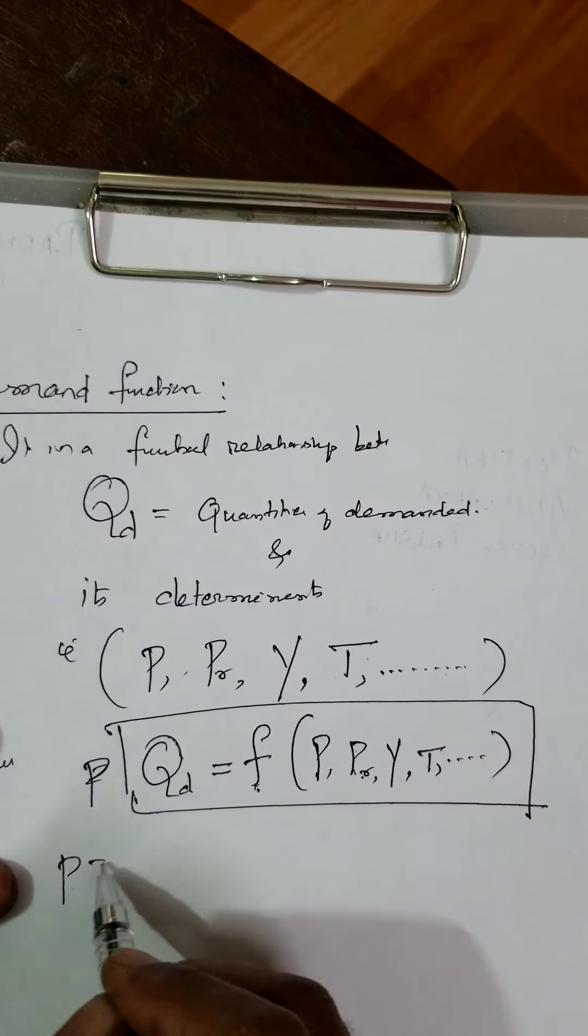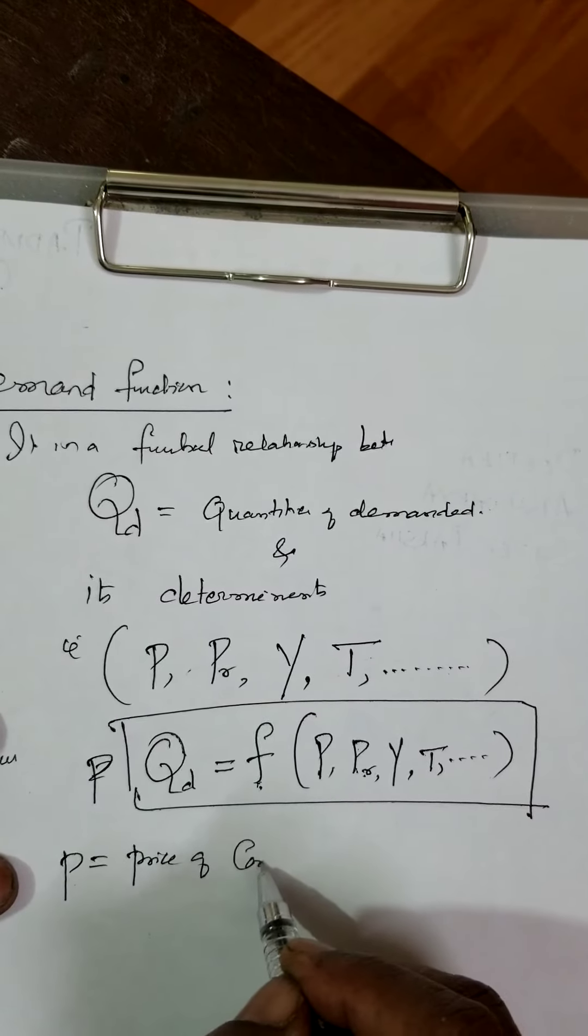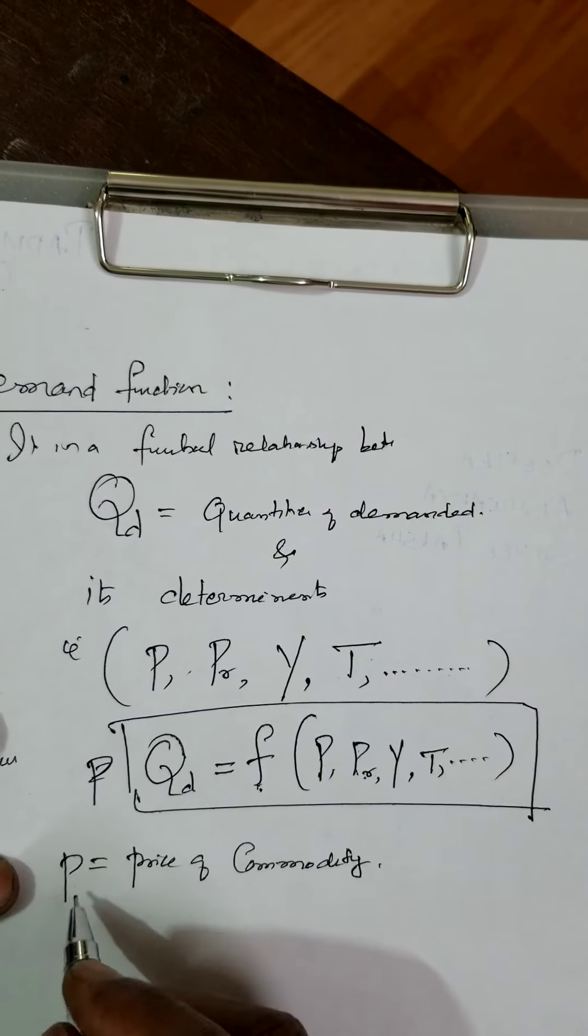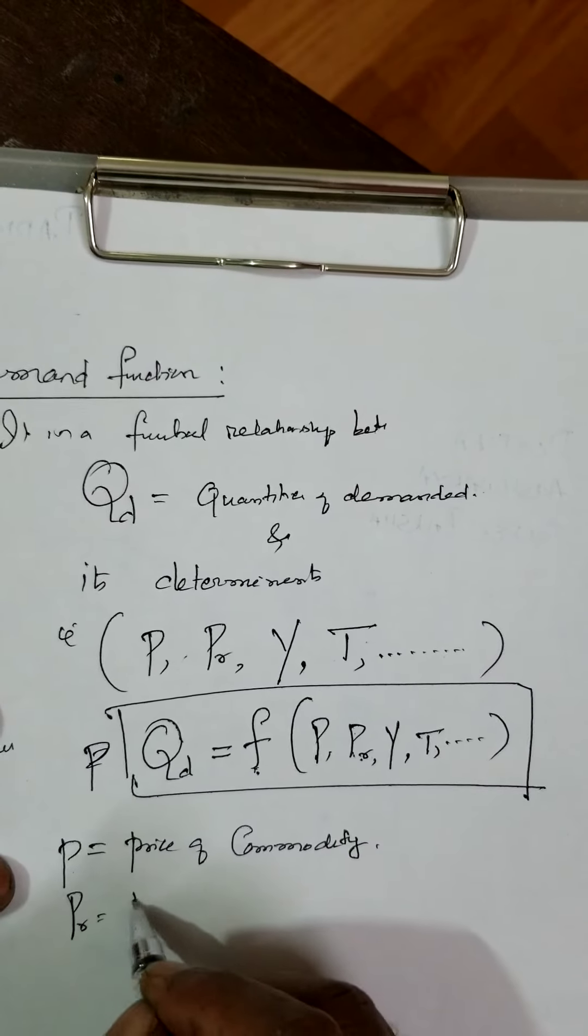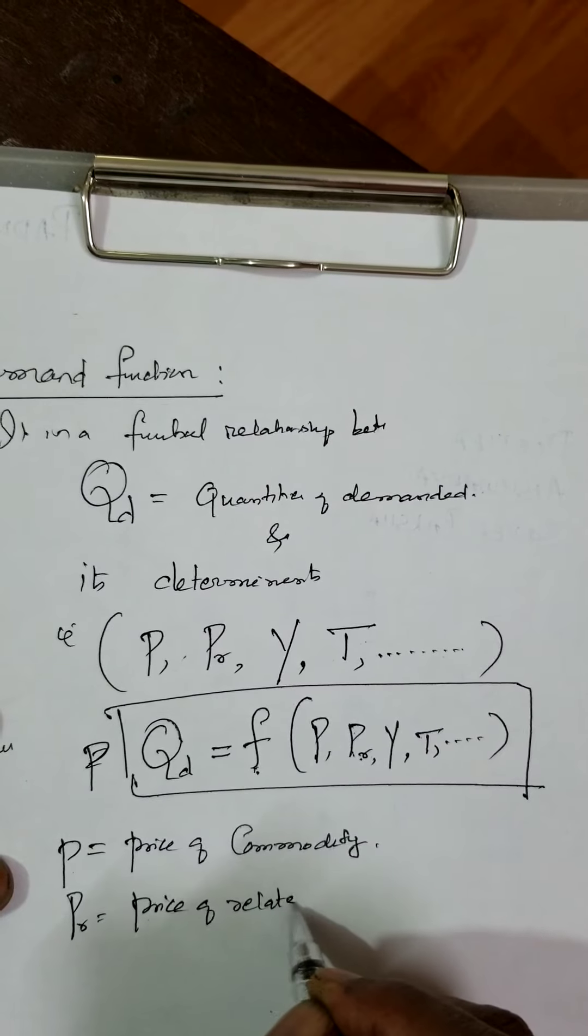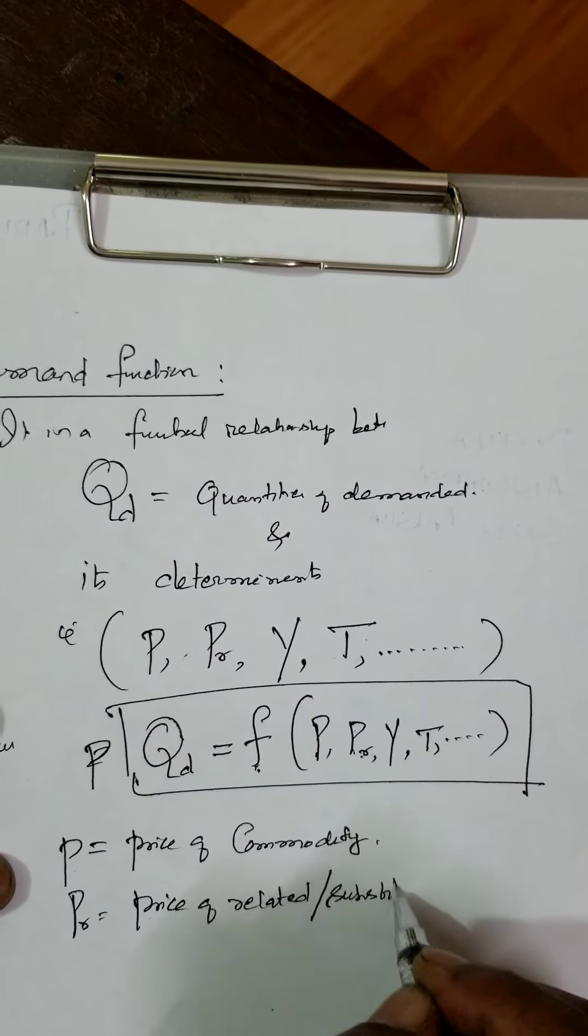I will write the terms. Where P is equal to price of commodity - example, food or whatever it is. Ps is price of related or substitutes.